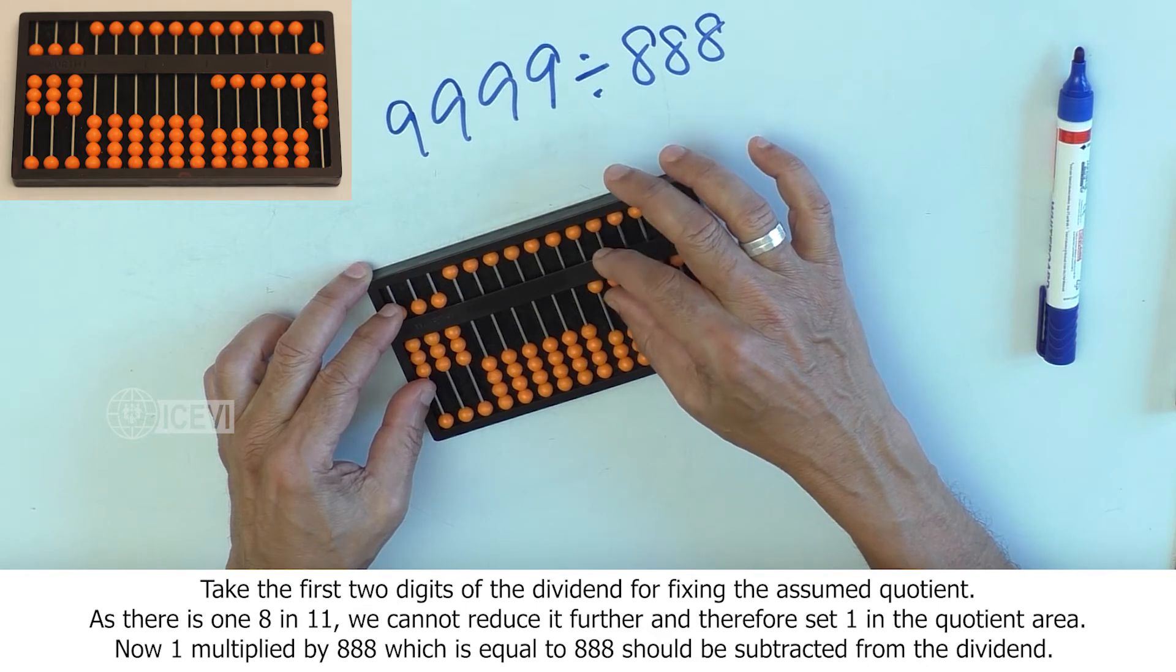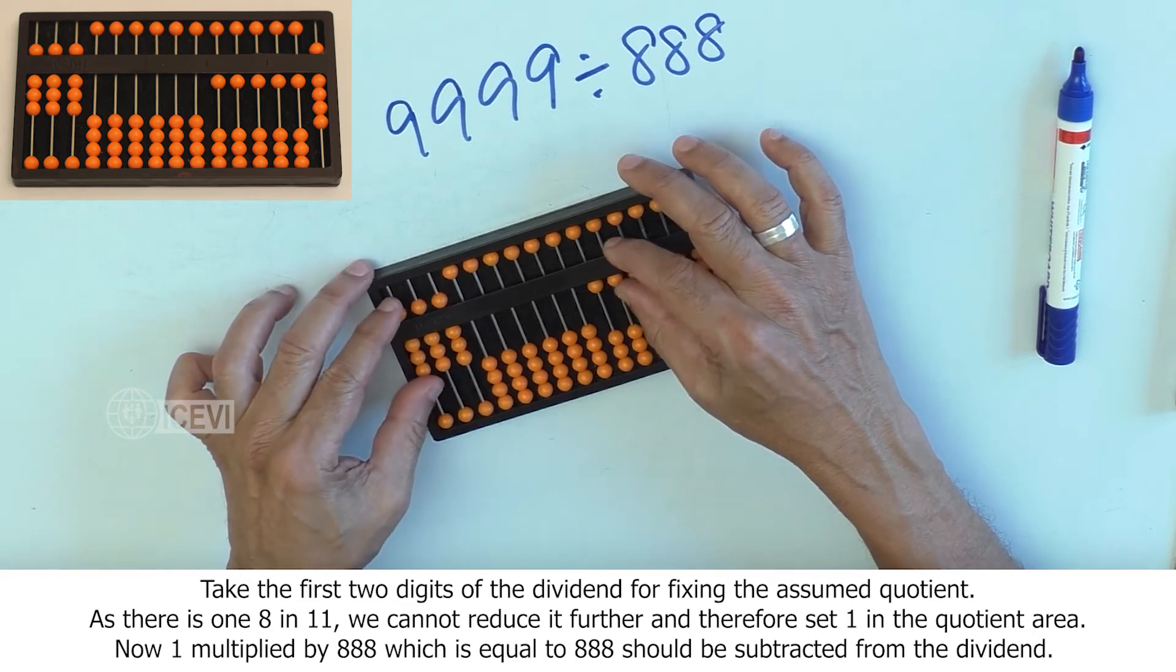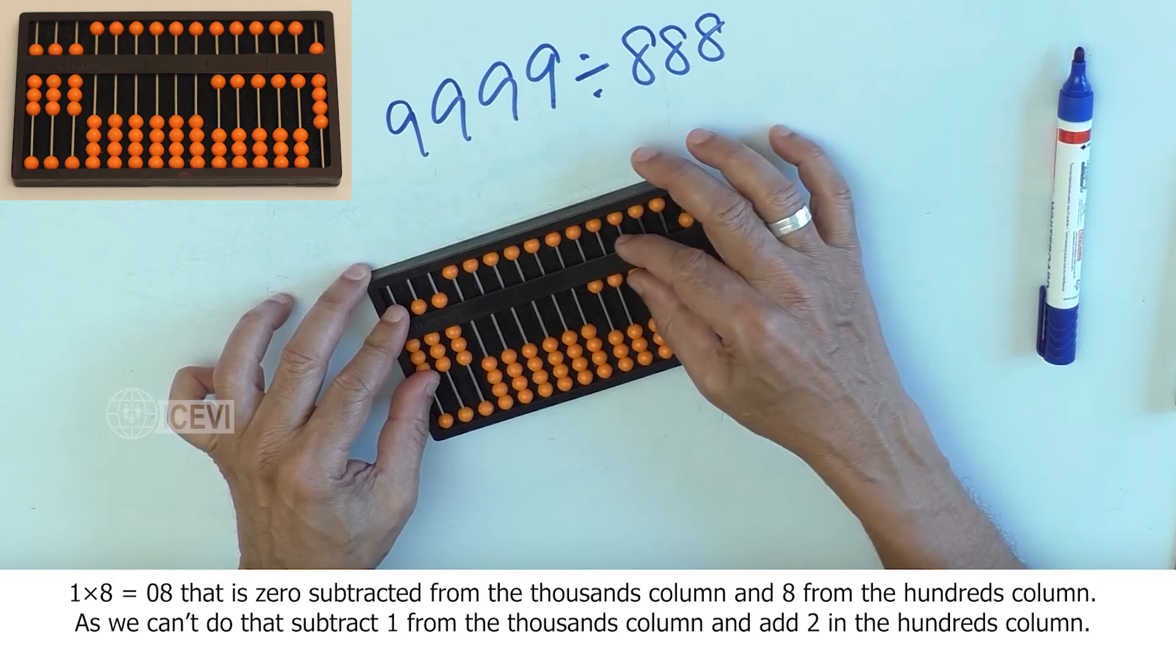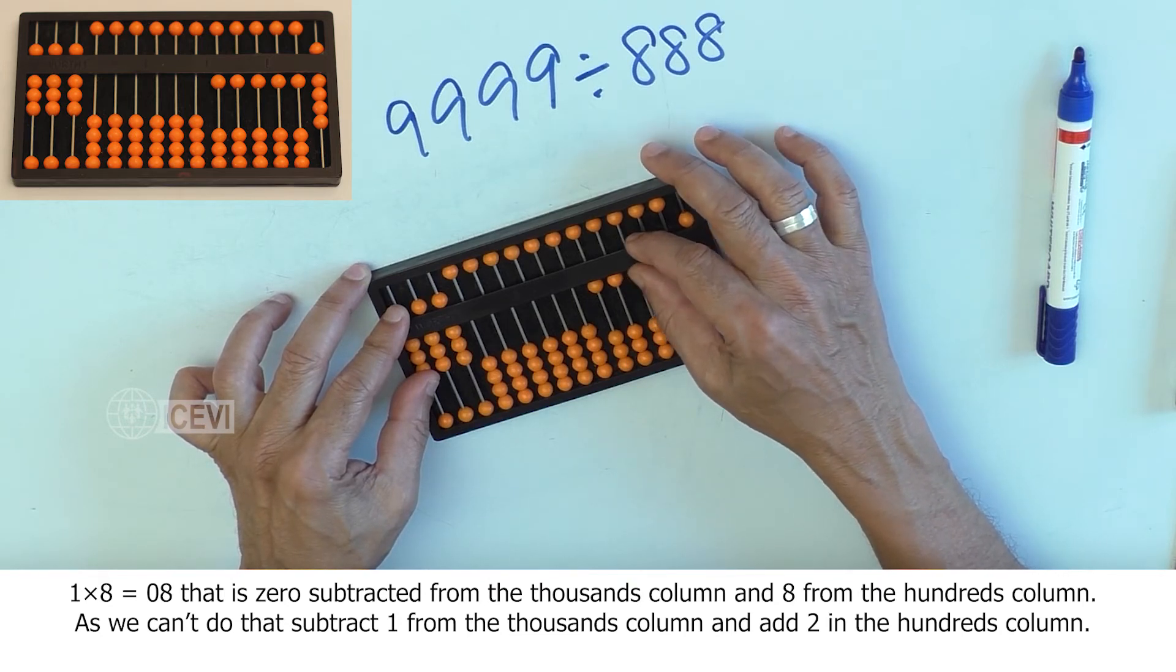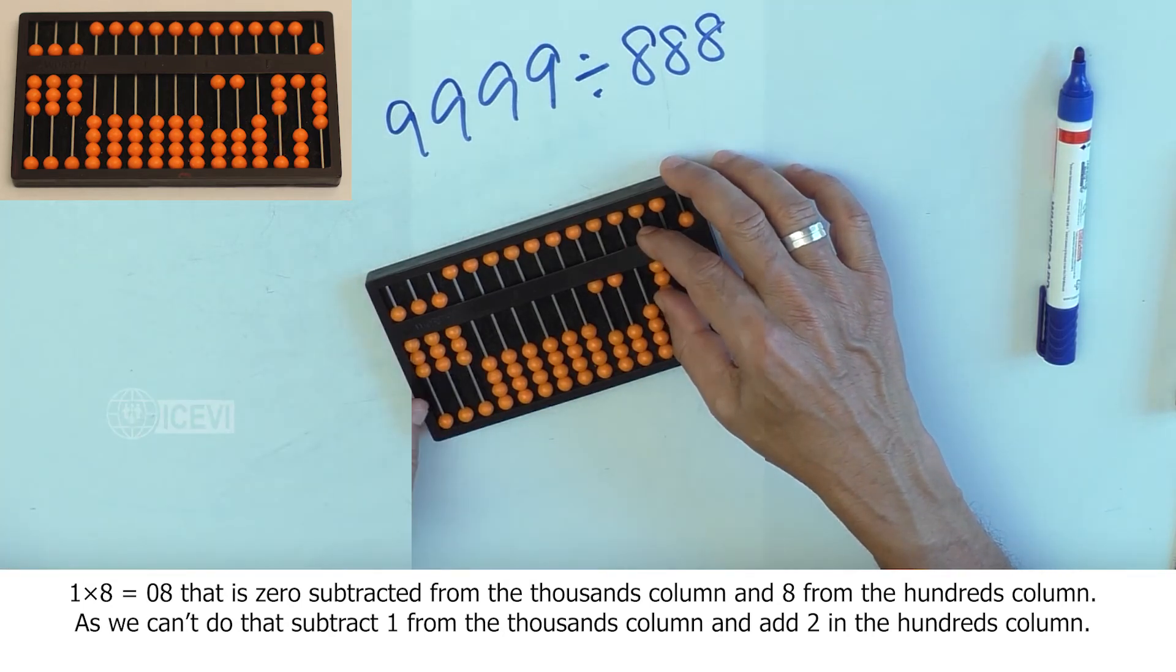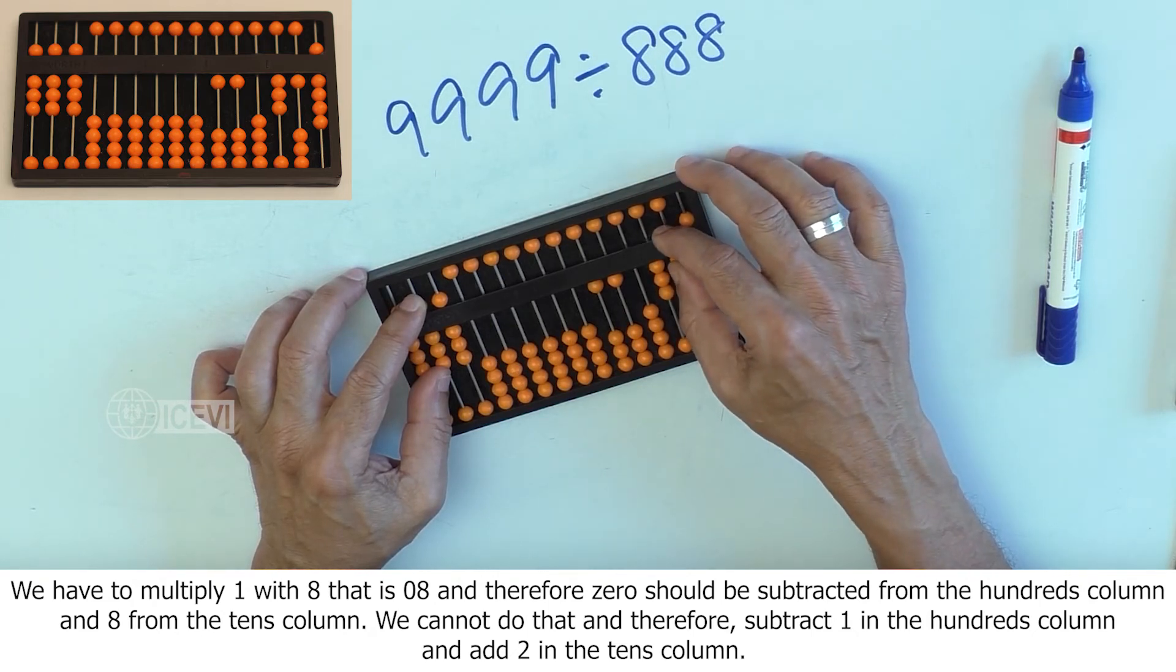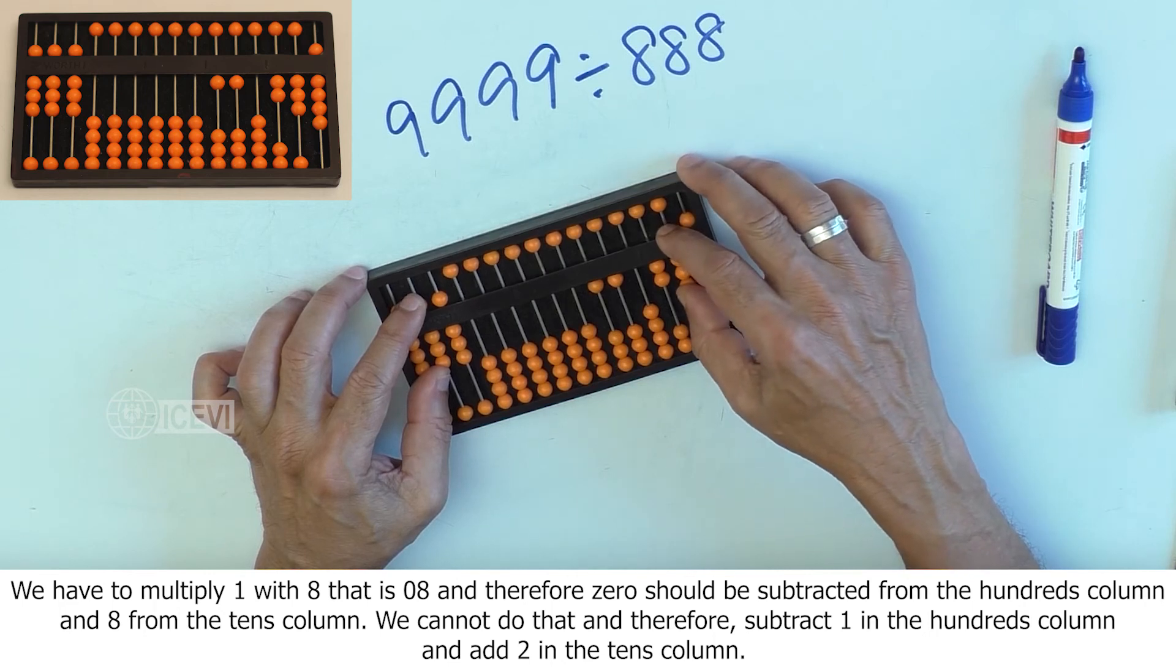Now 1 multiplied by 888, which equals 888, should be subtracted from the dividend. That is, 1 multiplied by 8, which is 08. That is, 0 subtracted from the thousands column and 8 from the hundreds column. As we can't do that, subtract 1 from the thousands column and add 2 in the hundreds column. We have to multiply 1 with 8, which is 08, and we have to subtract 0 from the hundreds column and 8 from the tens column. Now we cannot do that, and therefore we subtract 1 in the hundreds column and add 2 in the tens column.